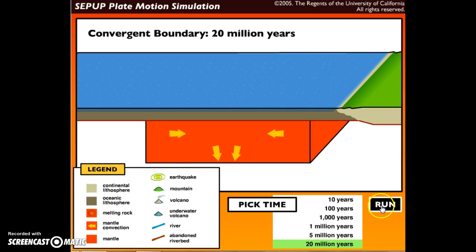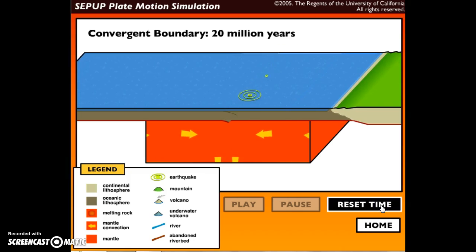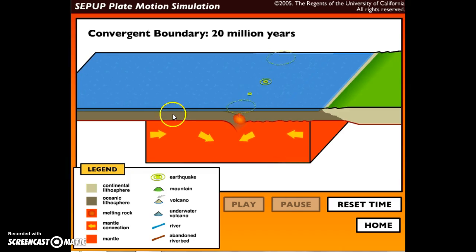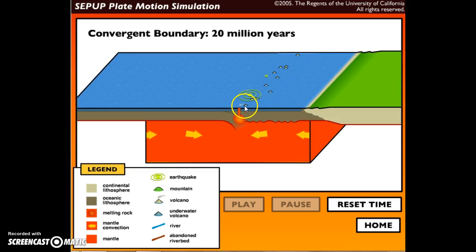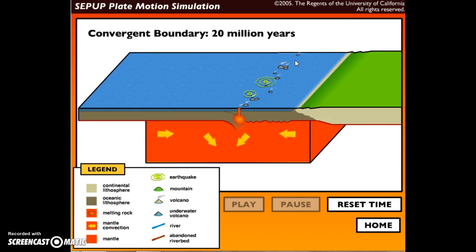We can see the mantle convection still moving in circular motion. We see that one of the oceanic crusts was pushed beneath another. We see volcanoes are being formed as a geologic feature or event.